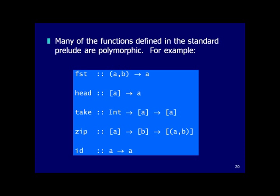Just like C#'s `System.Collections.Generic`, most functions in Haskell's standard library are also polymorphic. Here are some examples from the Haskell Prelude: `fst :: (a, b) -> a` returns the first element of a pair; `head :: [a] -> a` returns the first element of a list; `take :: Int -> [a] -> [a]` returns the first N elements.